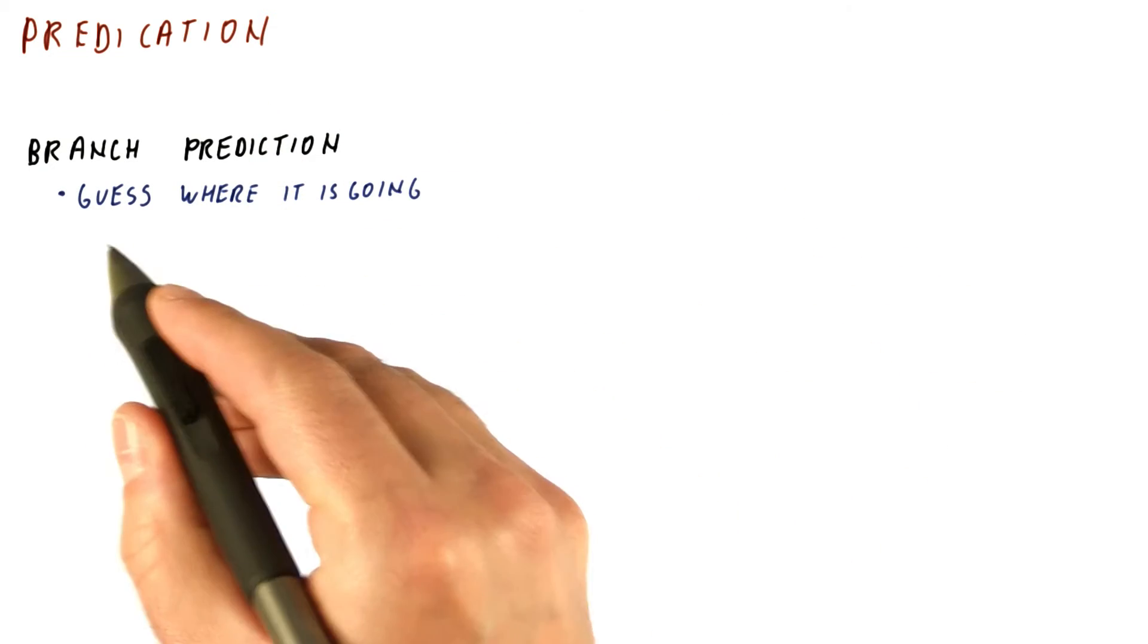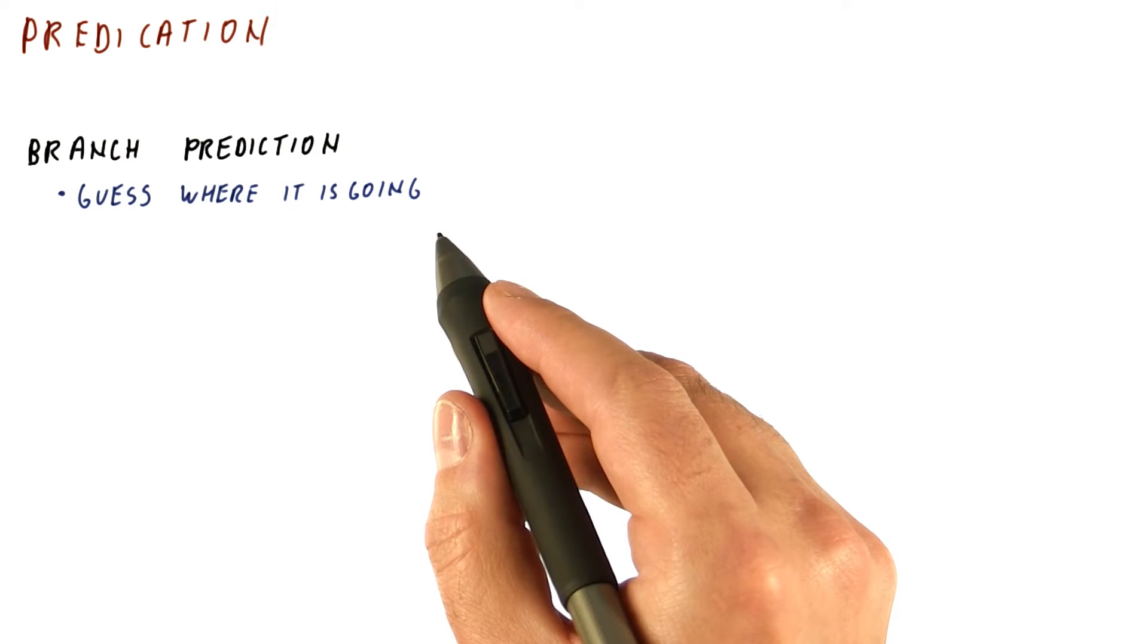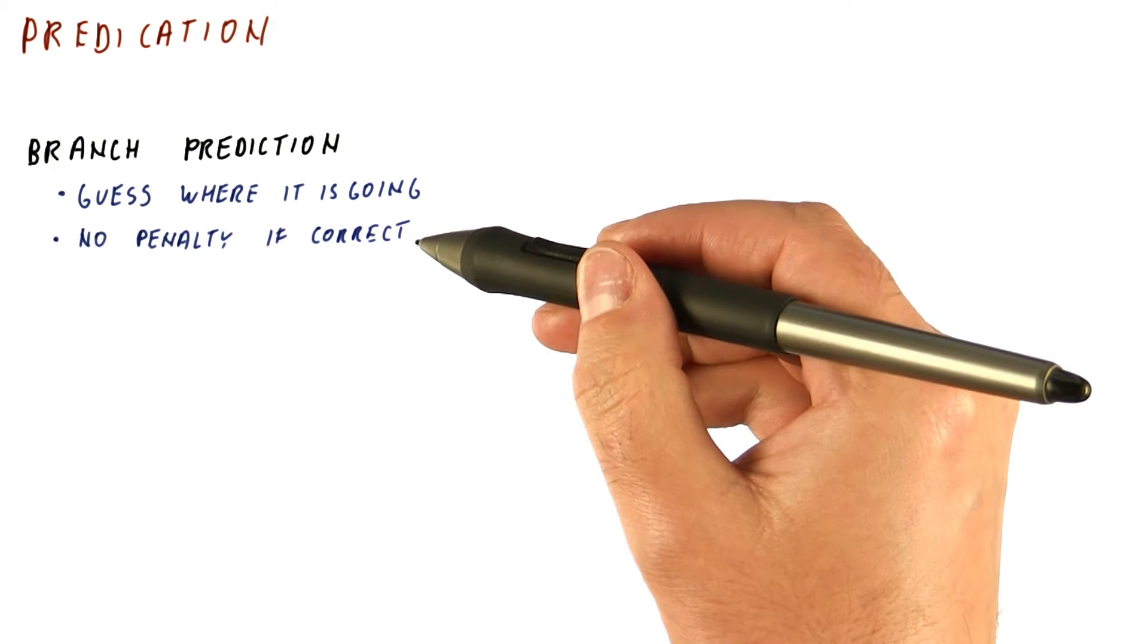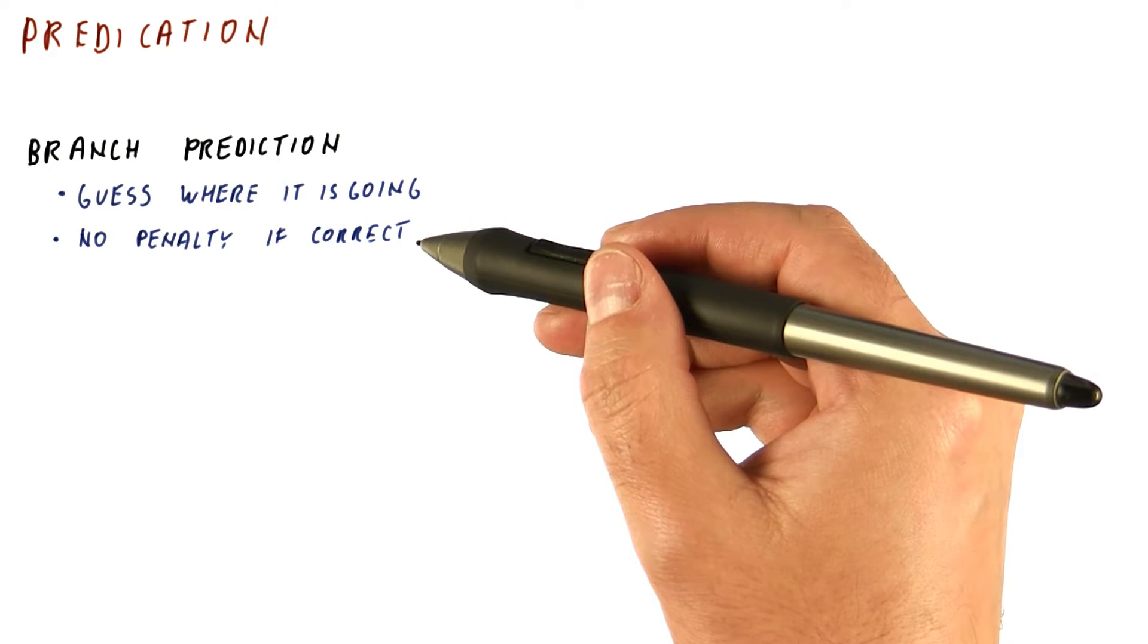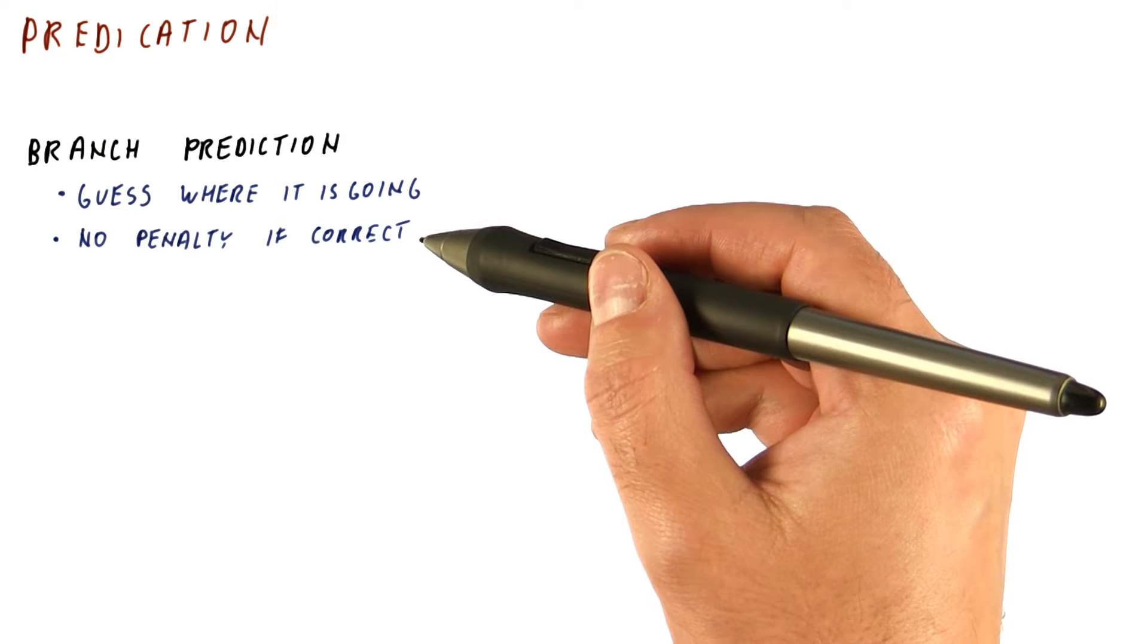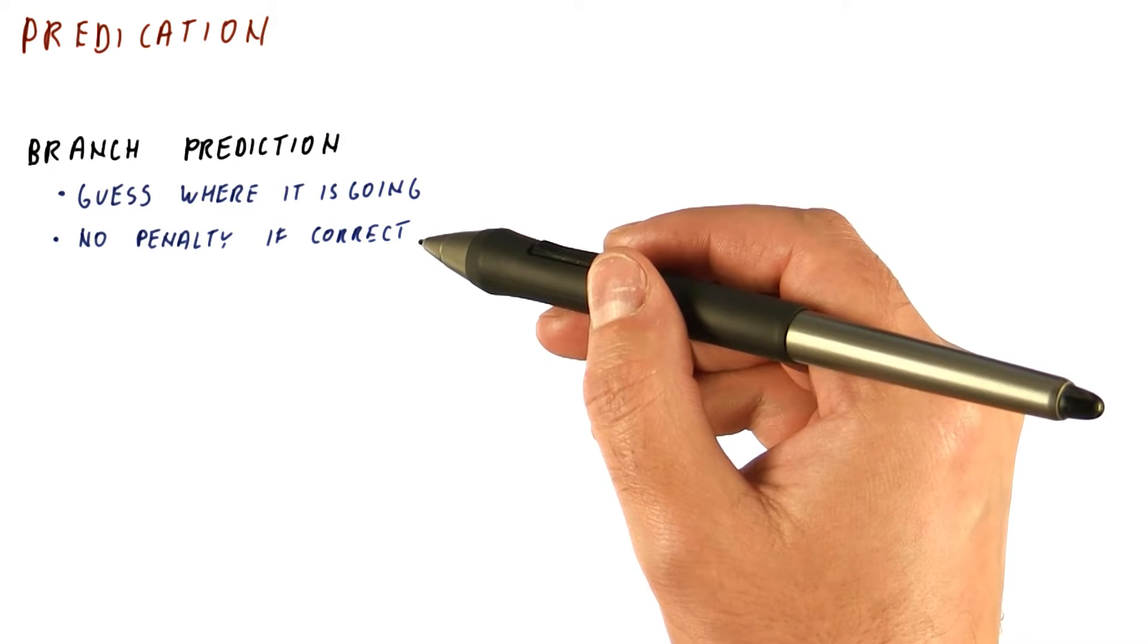Branch prediction is about guessing where the program is going. Usually there is no penalty for being correct in branch prediction. Pretty much we just keep fetching as if the branch wasn't even there. Even if the branch is actually taken, we can just keep fetching from the right place and thus avoid any penalty.